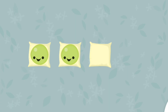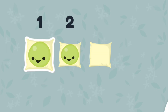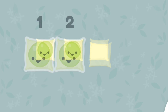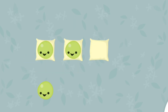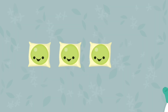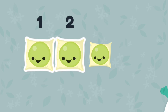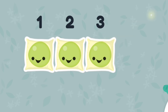Tap and count the peas. One. Two. You tapped two peas. Drag one pea to the empty square. Keep up the good work. How many peas are there now? Tap to count them. One. Two. Three. There are three peas now. Let's count some more.